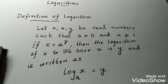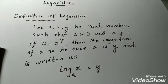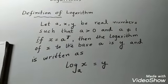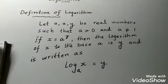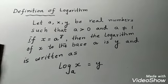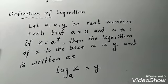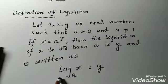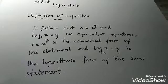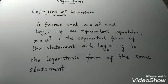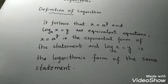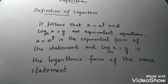Here, A, X and Y are three real numbers and the value of A is greater than 0. If X is equal to A exponent Y, then the logarithm of X to the base A is Y, written as log A, X is equal to Y. It follows that X is equal to A exponent Y and log A, X is equal to Y are equivalent equations.